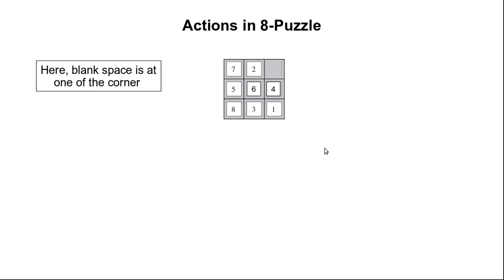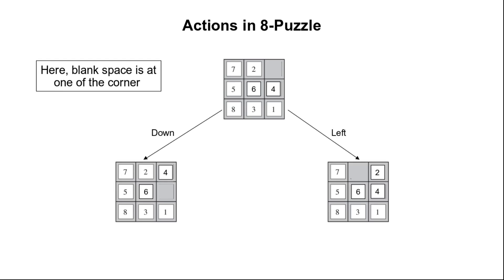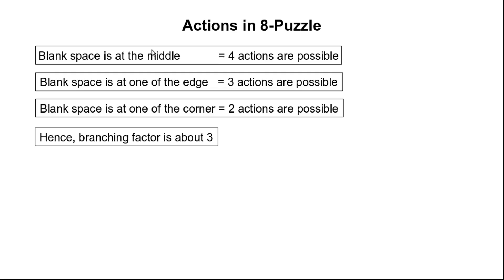Next, consider that the blank space is in one of the four corners. When the blank space is in one of the four corners, only two different actions can be performed. In this particular configuration the blank space can either move downward or to the left. Moving the blank space downward gives one new configuration, and moving it to the left gives another. So when the blank space is at the middle four actions are possible, at an edge three actions are possible, and at a corner two actions are possible.